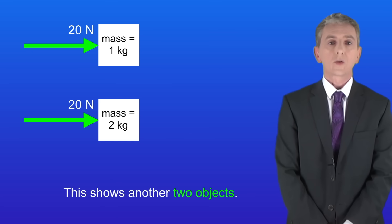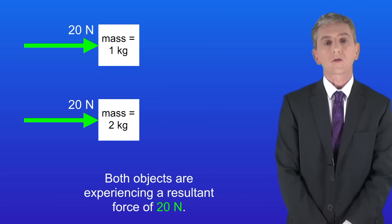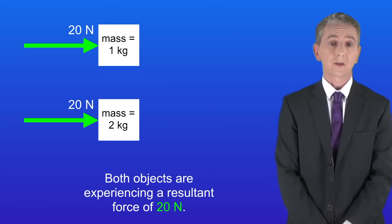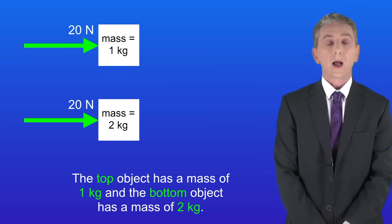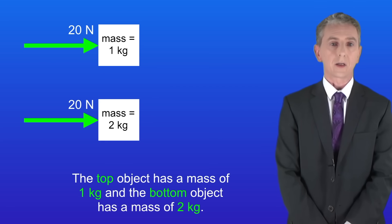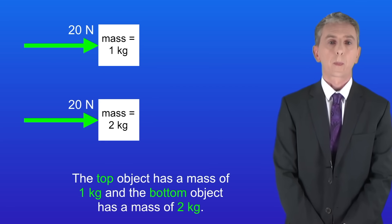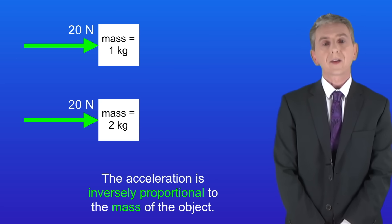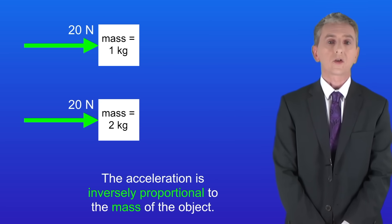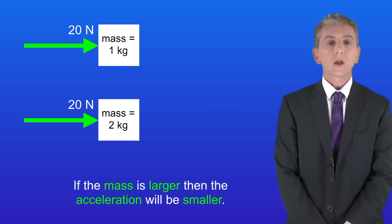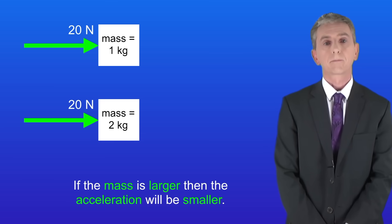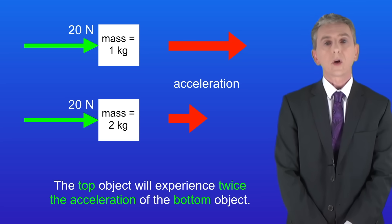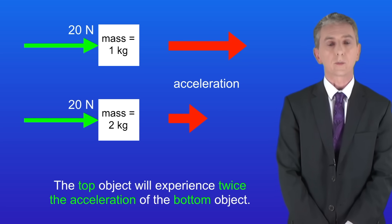This shows another two objects, and both objects are experiencing a resultant force of 20 newtons. The top object has a mass of one kilogram and the bottom object has a mass of two kilograms. As the acceleration is inversely proportional to the mass, if the mass is larger then the acceleration will be smaller. So once again the top object will experience twice the acceleration of the bottom object.